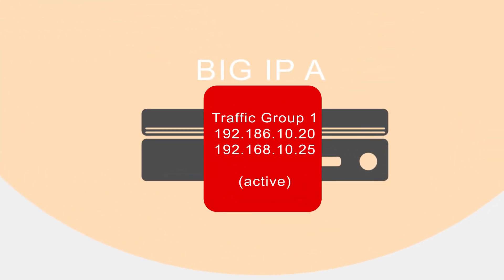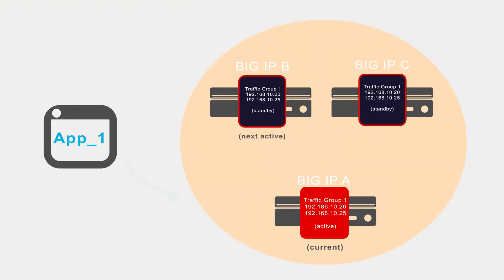Every BIG-IP system comes with a default floating traffic group named traffic group 1. When you create a floating self-IP and a virtual server address for an application flow, the BIG-IP system initially puts these addresses into traffic group 1. Here we see a device group where an application flow is targeting the floating IPs in traffic group 1, with only one instance active for the traffic flow while all other instances are in a standby state.